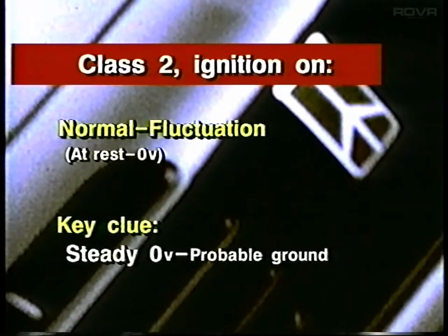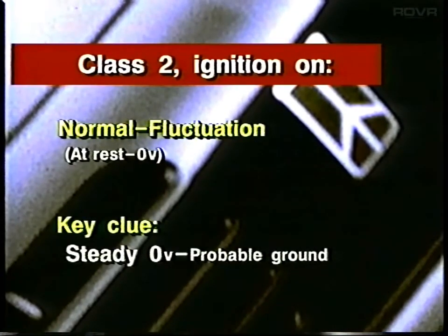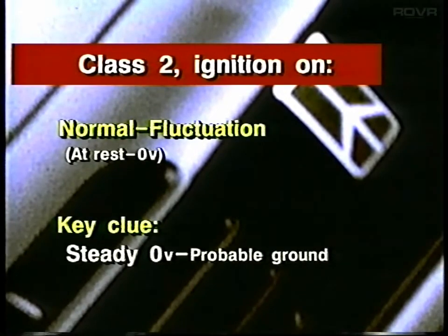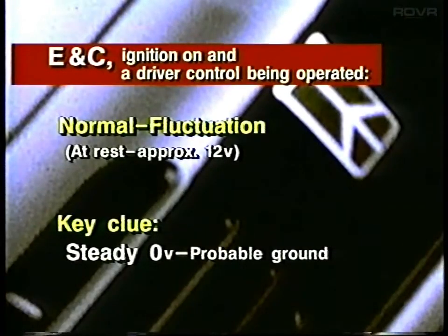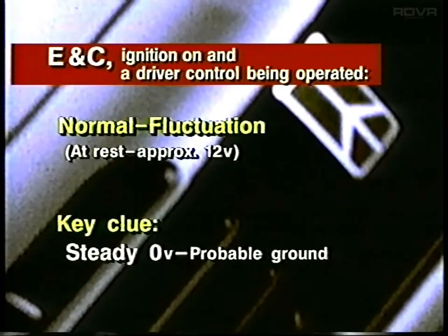Normal voltage in the Class II bus will act the same way, with one exception: the Class II bus rests at zero voltage, not the system high of seven volts. You might see this resting voltage in systems which have only the PCM on the bus. So on a Class II bus, don't think zero voltage means a ground in the line and pull the PCM — zero may well mean the bus is fine. On the E&C bus, voltage will generally rest at close to the system high of 12 volts, unless you operate one of the driver controls. In some systems, this high voltage may be seen even with the key off.